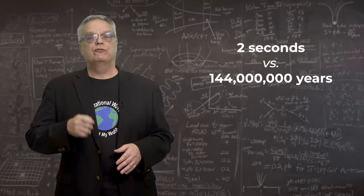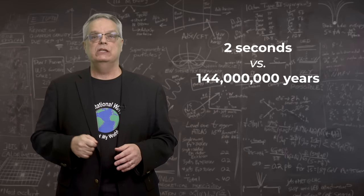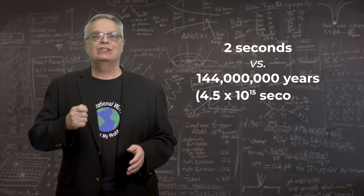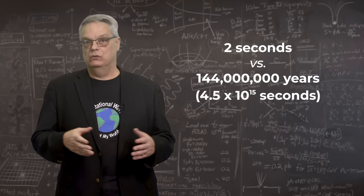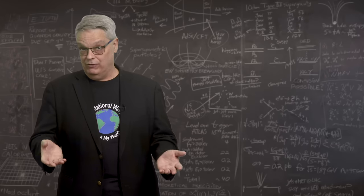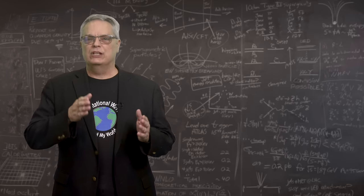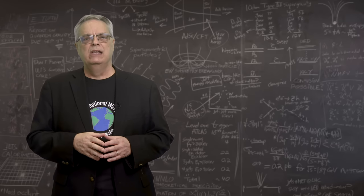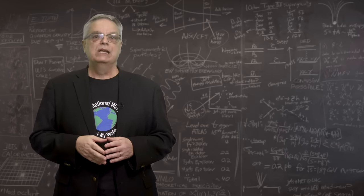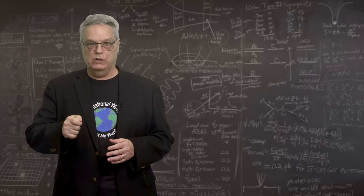They both traveled for 144 million years. That's 4.5 times 10 to the 15 seconds, and the two pulses arrived within two seconds of one another. And from this, we can say with extremely small uncertainties that gravity moves at the speed of light. The difference is, ballpark, less than one part in a quadrillion.